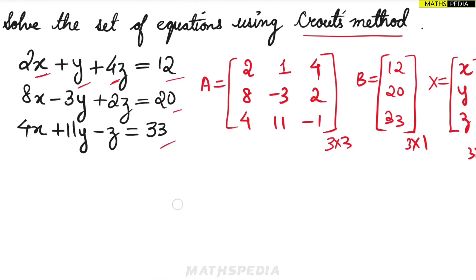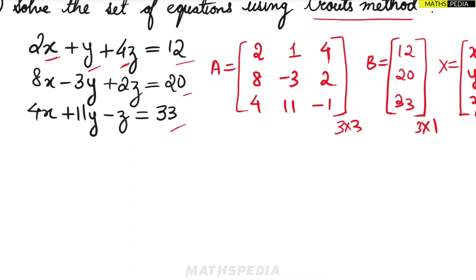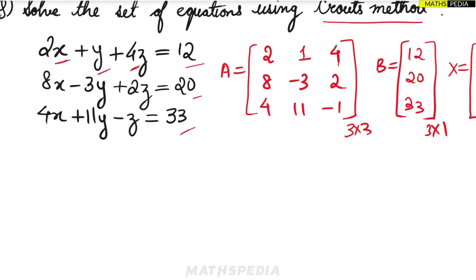In Crout's method, unlike Doolittle's method where the diagonal elements of the lower triangular matrix are 1, here the upper triangular matrix U has diagonal elements equal to 1. The second step is to form A = LU.